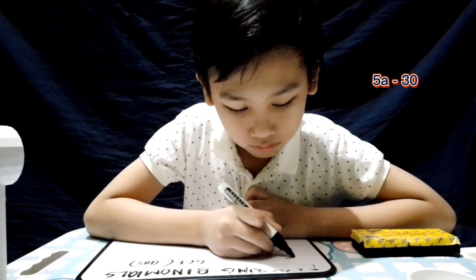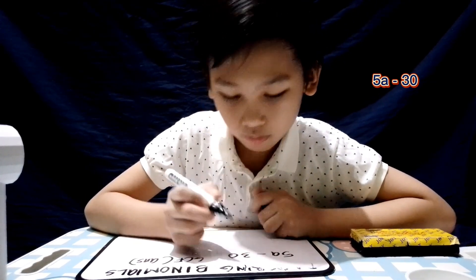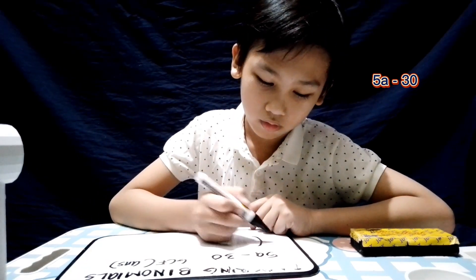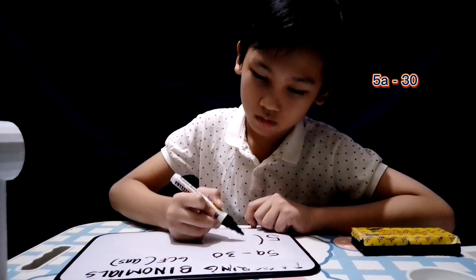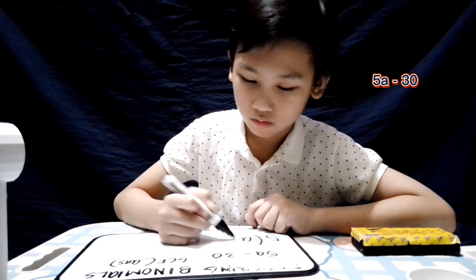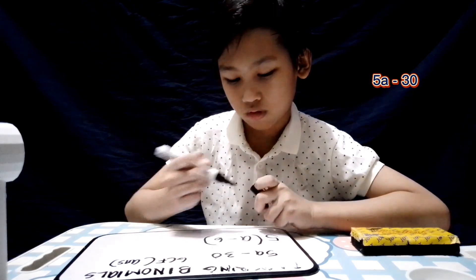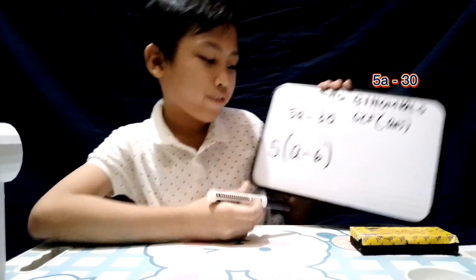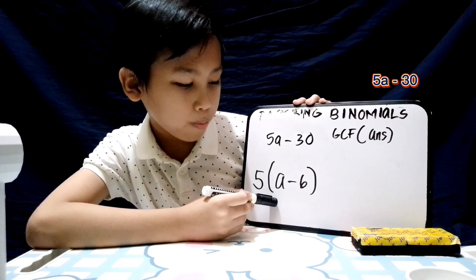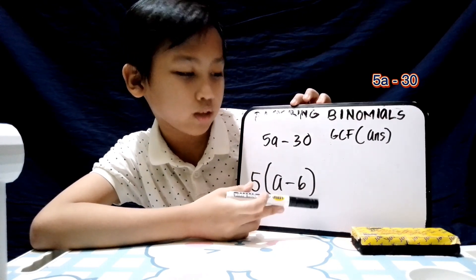Next: 5a minus 30. This is the last number for our first part. The answer is 5 times open parenthesis a minus 6, close parenthesis. Very good.